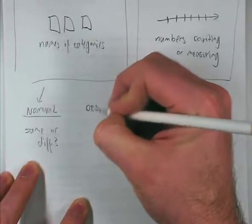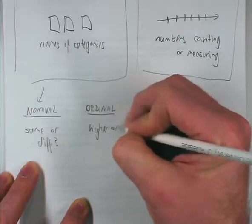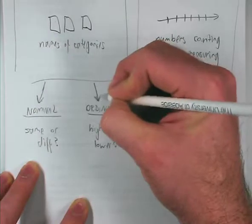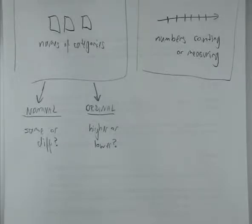Whereas ordinal variables — you can say higher or lower. For example, 'well done' is more than 'rare' for steak doneness, so you can say higher or lower. Whereas a library call number is really just representing a bucket you can put things in — you can't say that books about fish are higher than books about bats. They're just different, so those are nominal.